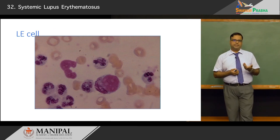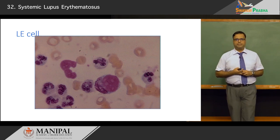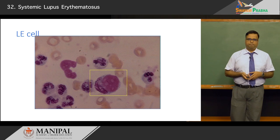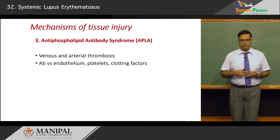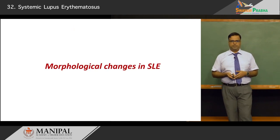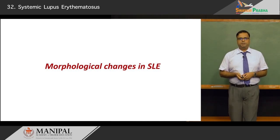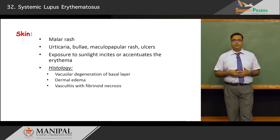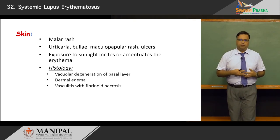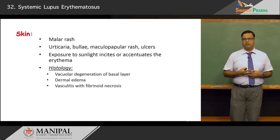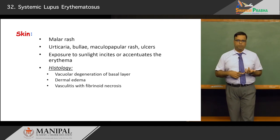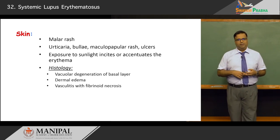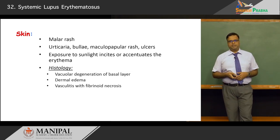Regarding morphological changes: in the skin, the malar rash is typified by vacuolar degeneration of the basal layer, dermal edema, and sometimes fibrinoid necrosis of vessels causing vasculitis. On gross examination, patients may have bullae, urticarial rashes, and maculopapular rashes, all accentuated by sun exposure. As shown on screen, the typical butterfly-shaped malar rash appears over the malar eminences and nasolabial fold.